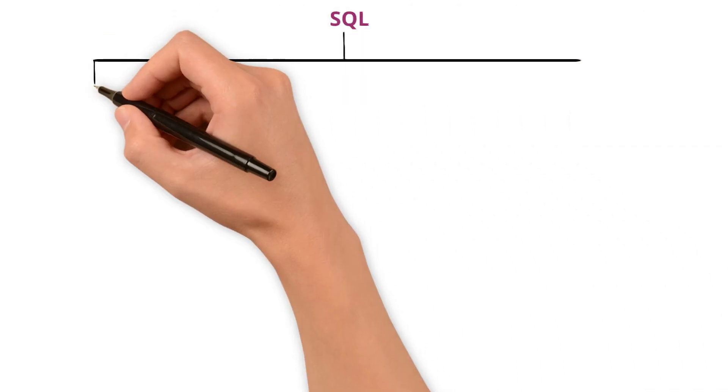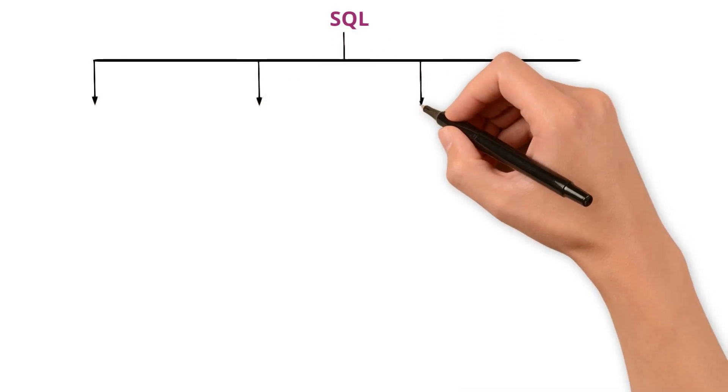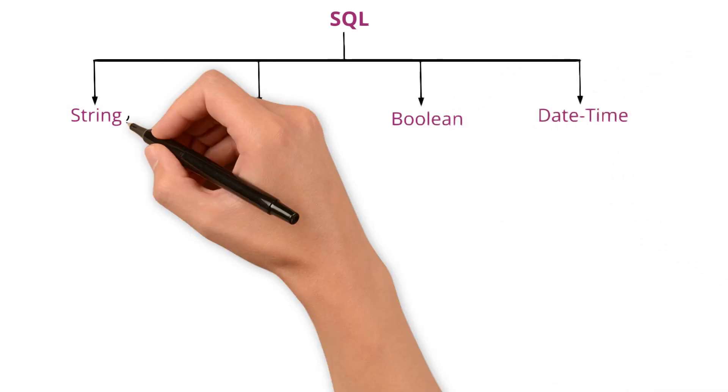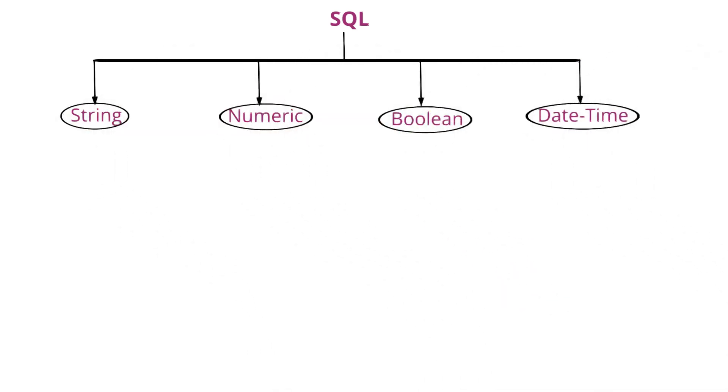SQL supports various data types broadly categorized into the groups: String, numeric, boolean, date and time. Let's look at each of them.